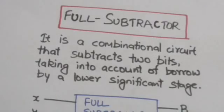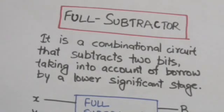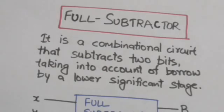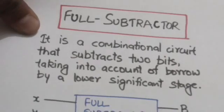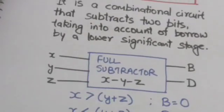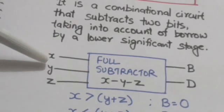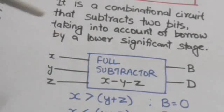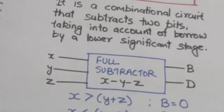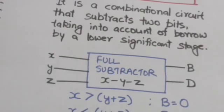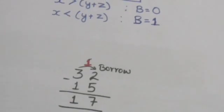Hello friends, welcome back to the tutorials. In this tutorial we will study about the full subtractor. A full subtractor is a combinational circuit that subtracts two bits taking into account the borrow by a lower significant stage. It has three input variables and two output variables. Input variables denoted by X and Y represent the bits to be subtracted, and Z represents the previous borrow by a lower significant stage.